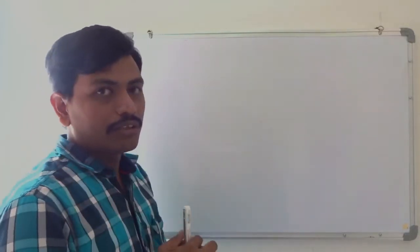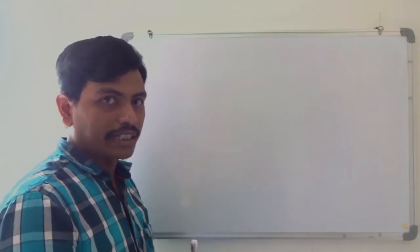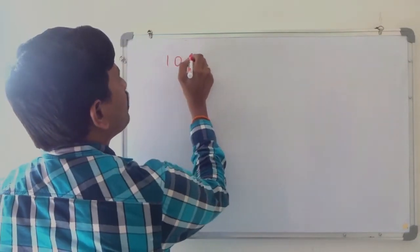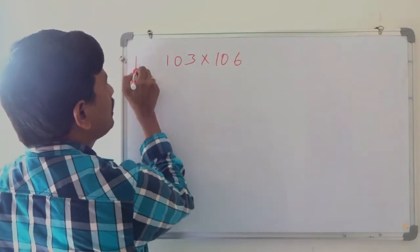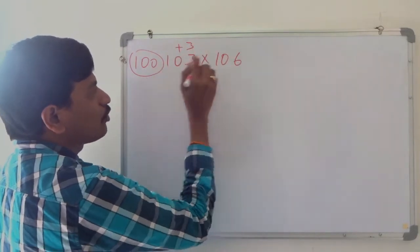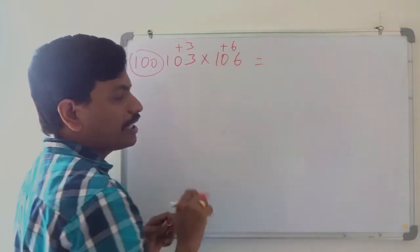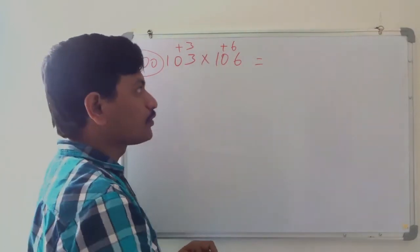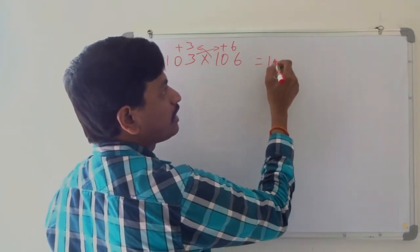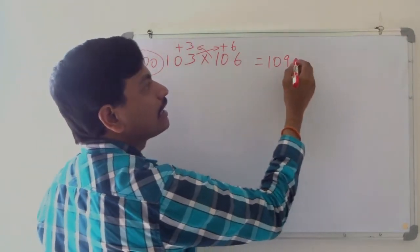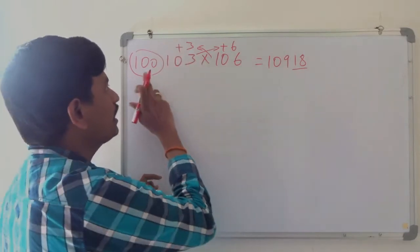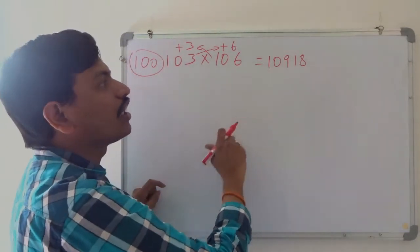Now we shall see the multiplication of numbers from 90 to 110. First we shall take 2 numbers from 100 to 110. I will take 103 multiplied by 106. Here also we take 100 as base. 103 is how much bigger than 100? Plus 3. 106 is how much bigger than 100? Plus 6. Same cross addition as we saw for 10 to 20: 103 plus 6 is same as 106 plus 3, which is 109. And 6 threes are 18. Here we can have 2 digits because the base has two zeros. So the answer is 10918.